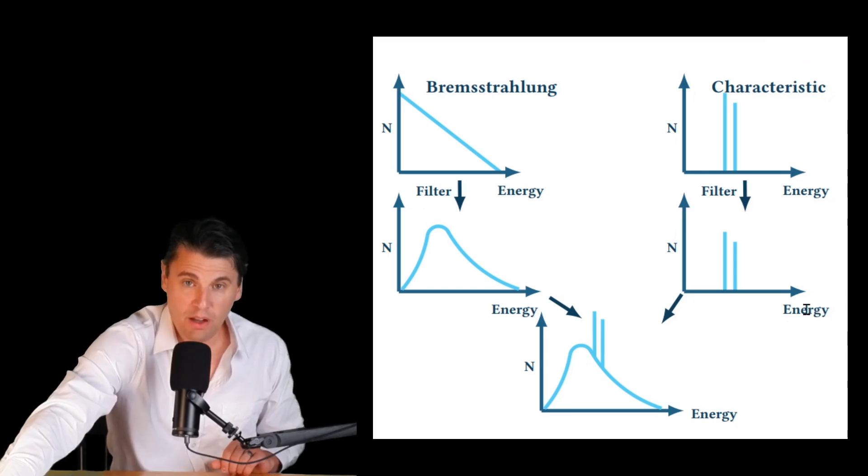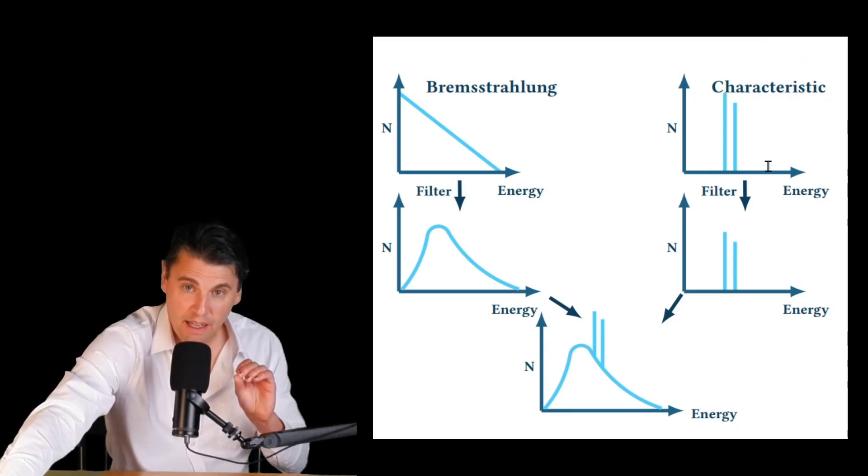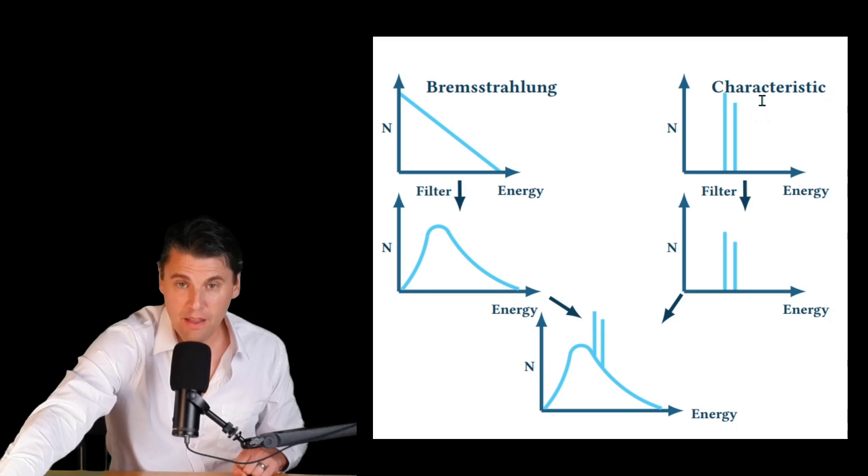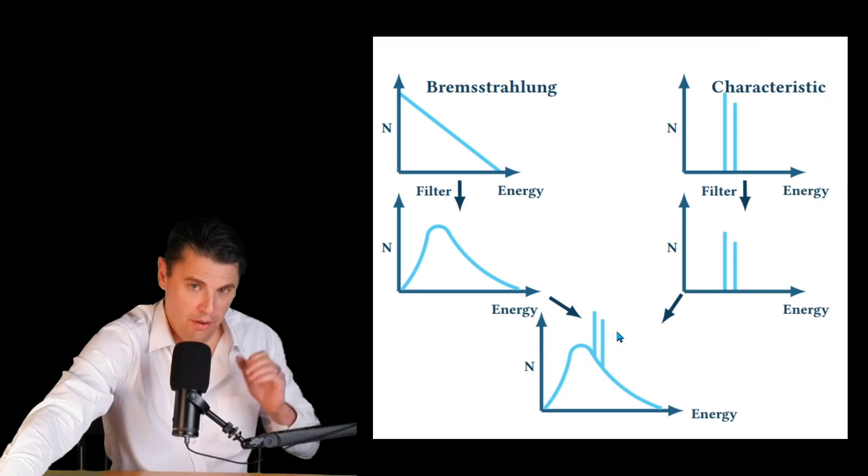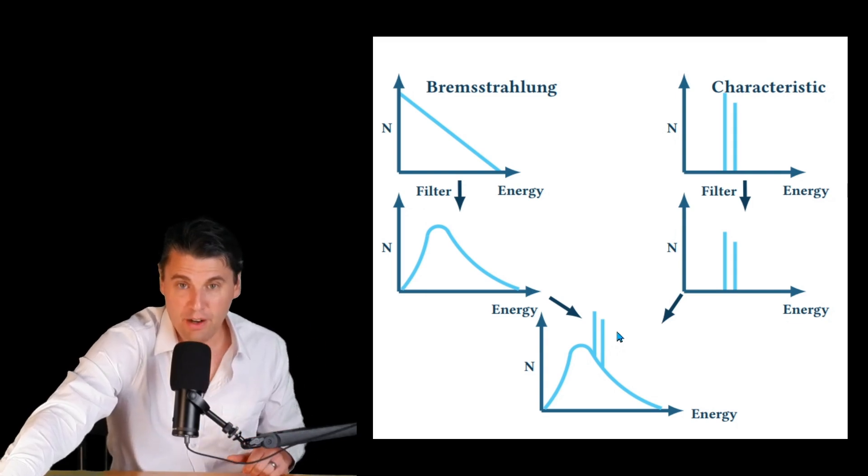On the other side is what we call characteristic radiation. That's what generates the little spikes in your x-ray spectra. If we add those two things together, we get our smooth curve from bremsstrahlung and our two spikes, or could be multiple spikes from characteristic, that is our x-ray spectra.